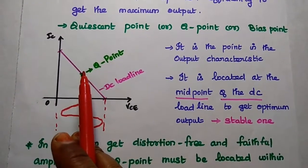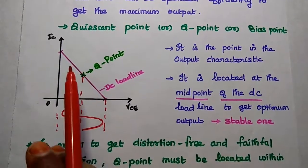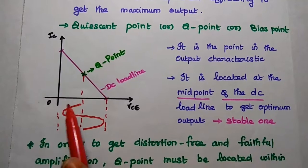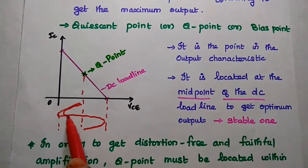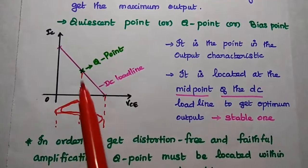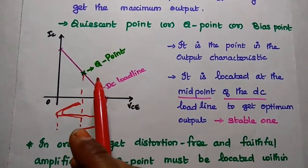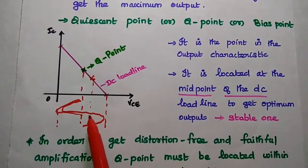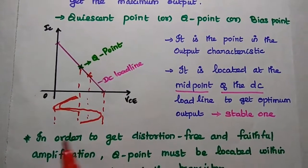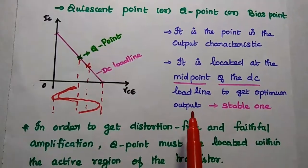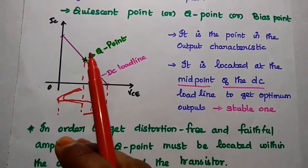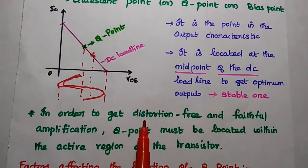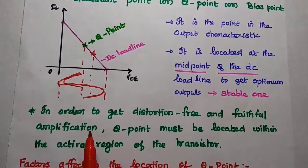If the Q point is located at the midpoint of the DC load line or AC load line, we can get the maximum output. If the Q point is located somewhere else apart from this midpoint, there may be some distortion in the output cycle. We have to ensure that the Q point is always located at the midpoint of the load line in order to get distortion-free and faithful amplification.